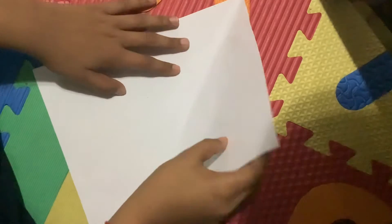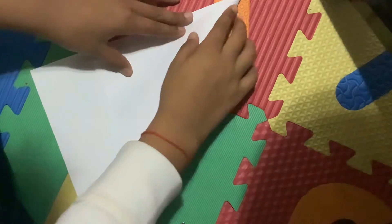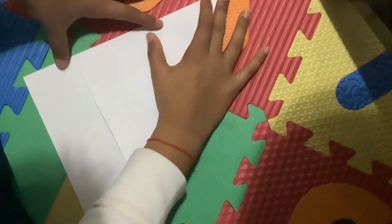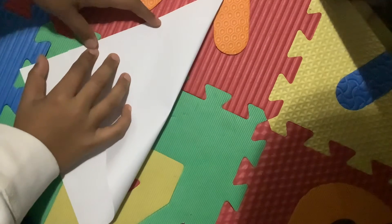Guys, today I'm going to be showing you how to make a cootie catcher. So first you have to fold the paper like this into a big triangle.